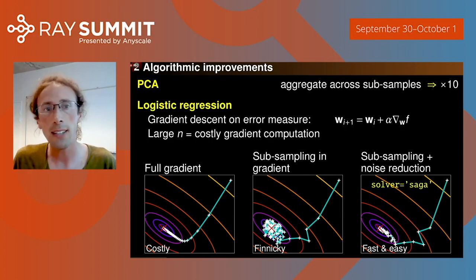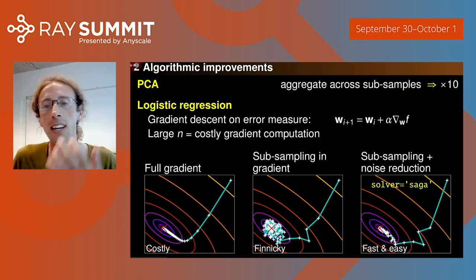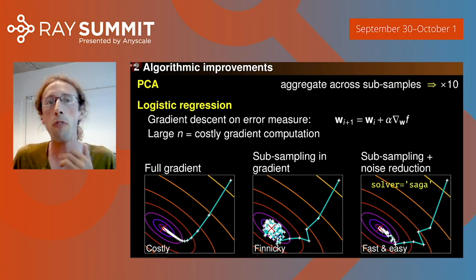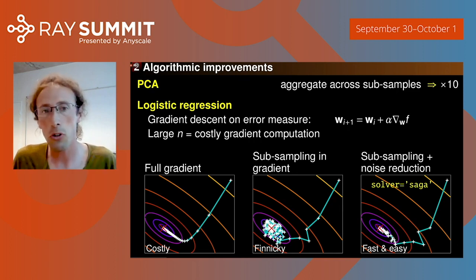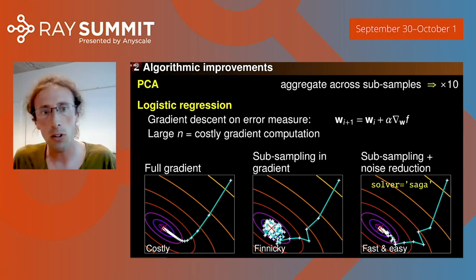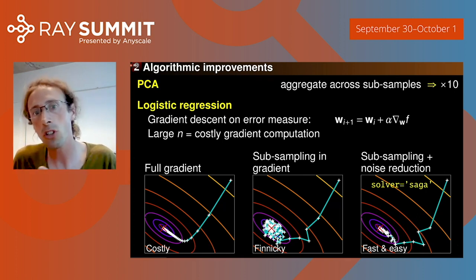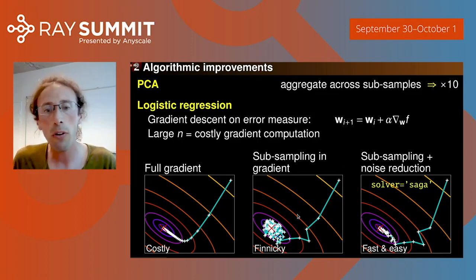Another common model is logistic regression. It has a cost that is traditionally minimized by gradient descent on a measure of error. When you have a very large number of samples, the error and its gradients are costly to compute because they are a sum over all samples. You can take the full gradient — summing all samples — for nice convergence, or take a small changing subset of samples to compute gradients, giving what's known as stochastic gradient descent. However, stochastic gradient descent is quite finicky and may not converge well.